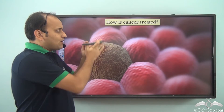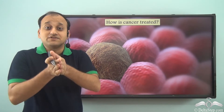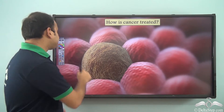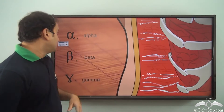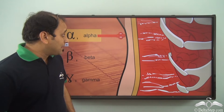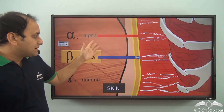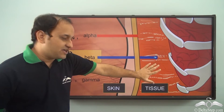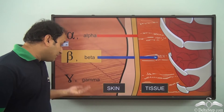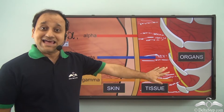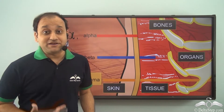Cancer is treated with the help of radioactive radiation. Alpha, beta, and gamma radiation each have their own penetrating power. Alpha particles are stopped by our skin, beta particles can penetrate our skin and reach our tissues, while gamma radiation can penetrate our bones and organs. This penetration power is used to treat cancer.